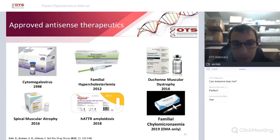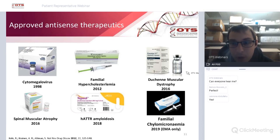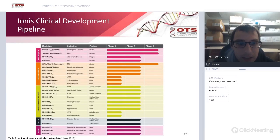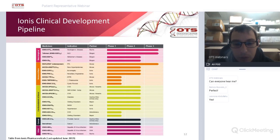Based on this method, there are six oligonucleotides approved by the FDA, EMA, or both, which is really exciting. Looking at the Ionis pipeline, you can see they target a range of diseases from diabetes to Huntington's disease — and this is just one company's pipeline, as there are many others working on antisense therapeutics.